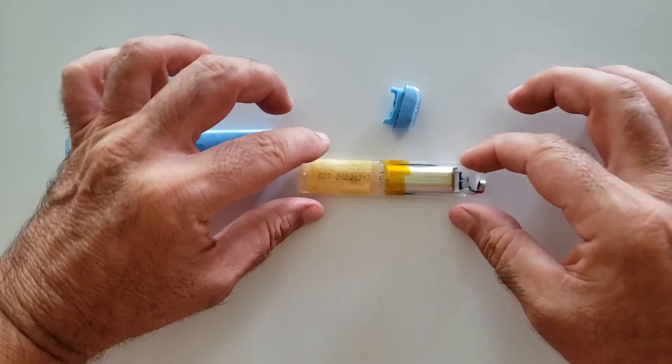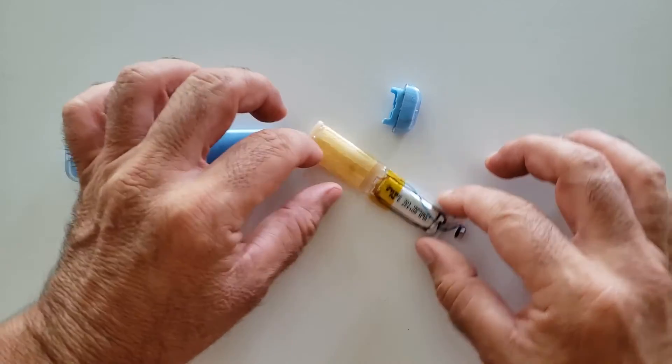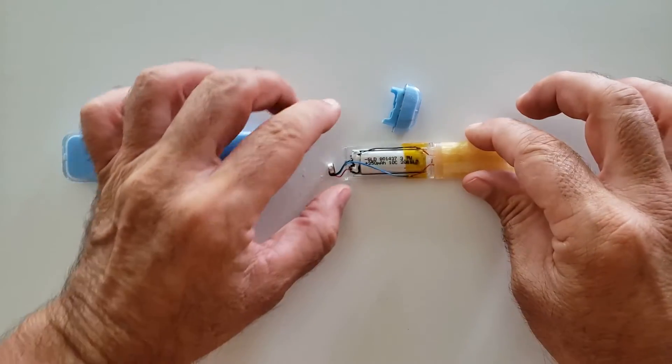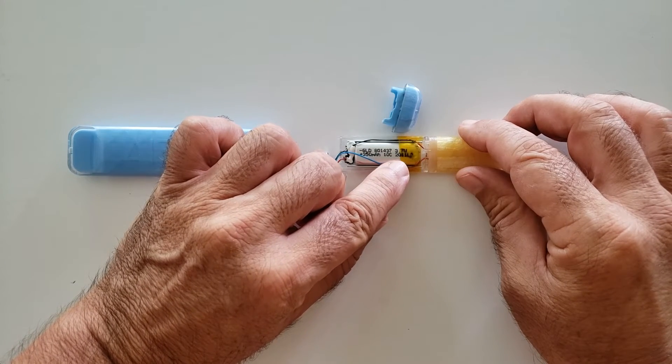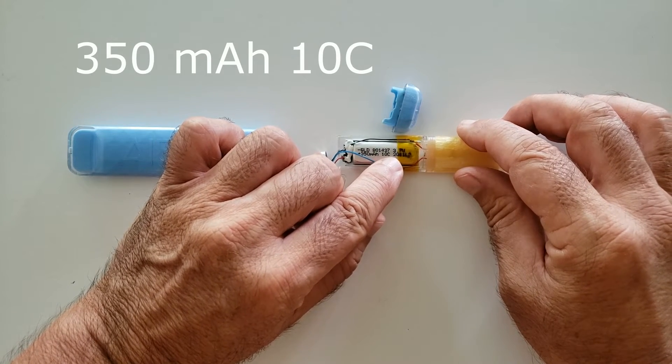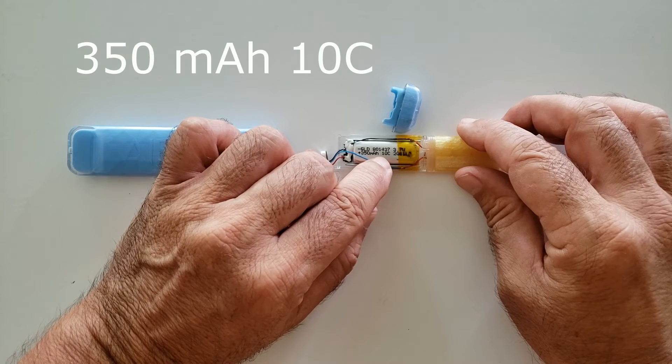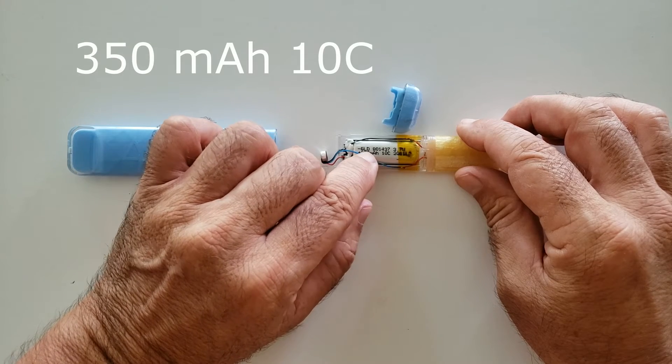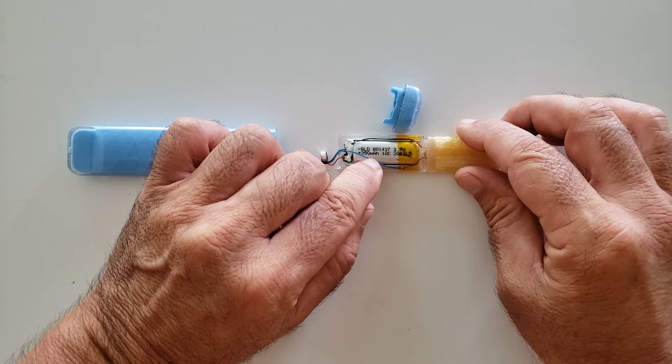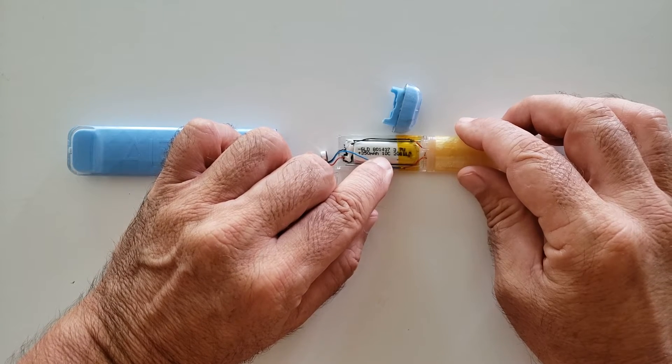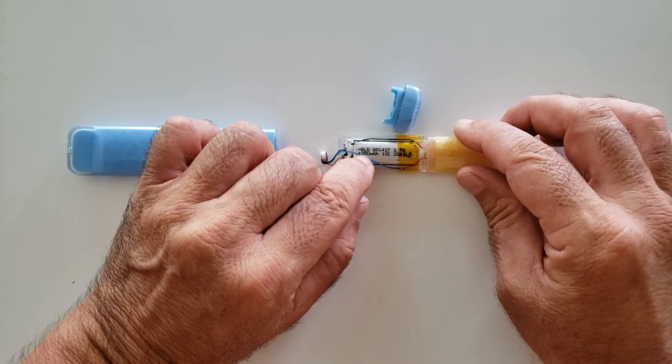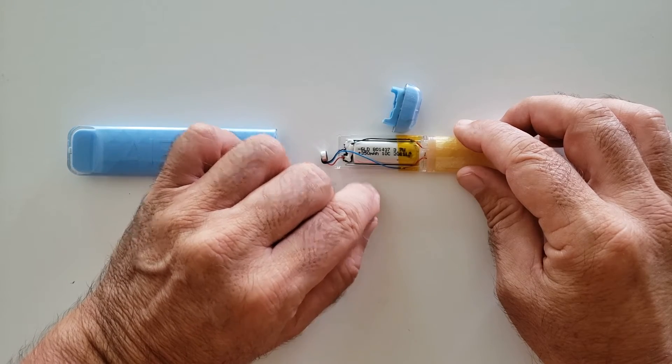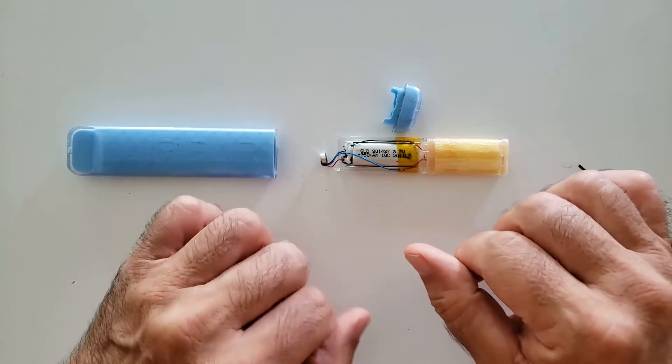Now here we have a 350 milliamp 10C lithium polymer battery. 10C is pretty good. What that basically says is that it can put out ten times the rated amount, so this can put out about three and a half amps, which would certainly heat up anything and make smoke out of pretty much anything, including itself if you're not careful.